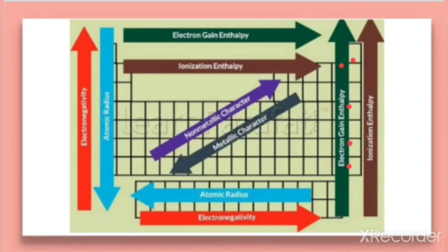Instead of losing electrons, elements on the extreme right hand side — except noble gases — have a greater tendency to gain electrons, so they show high negative electron gain enthalpy. Noble gases are an exception because they have completely filled shells, so they neither accept nor lose electrons, giving them the least reactivity.